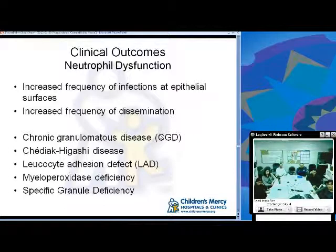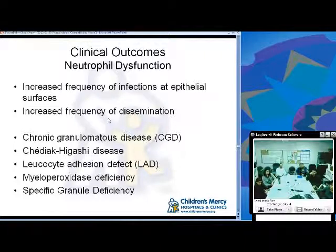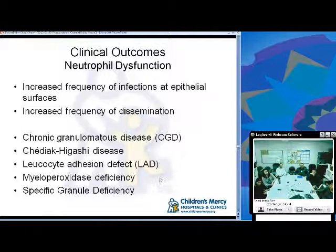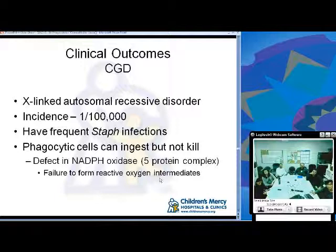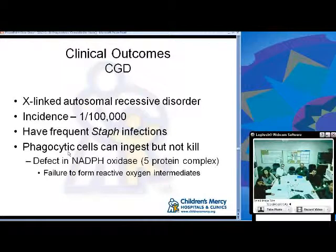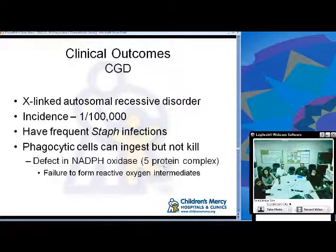With neutrophil dysfunction you get increased frequency of infections at epithelial surfaces and increased frequency of dissemination. Examples include chronic granulomatous disease (CGD), Chediak-Higashi disease, LAD (leukocyte adhesion defect), myeloperoxidase deficiency, and specific granule deficiency. CGD is an X-linked autosomal recessive disorder with an incidence of 1 in 100,000. Affected individuals have frequent staph infections. The phagocytic cell can ingest but can't kill, due to a defect in NADPH oxidase — a five-protein complex — resulting in failure to form reactive oxygen intermediates.